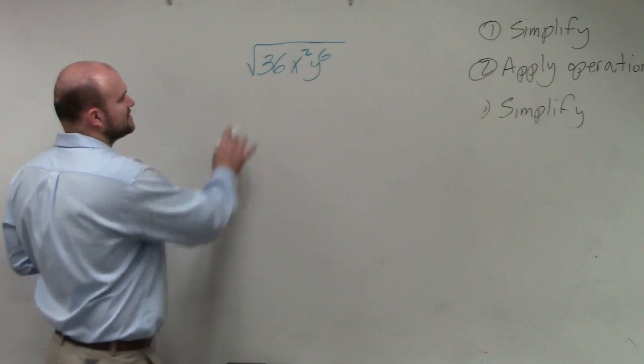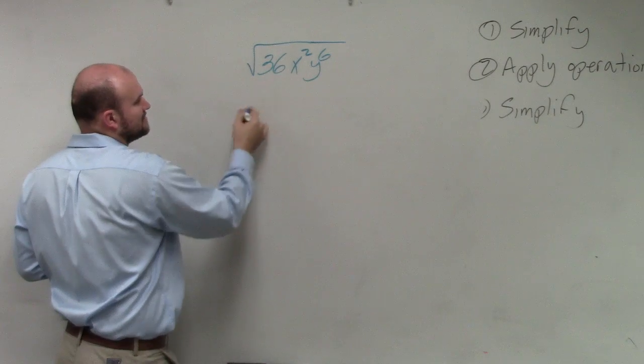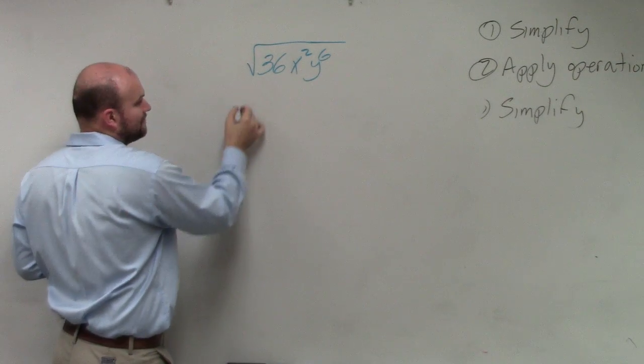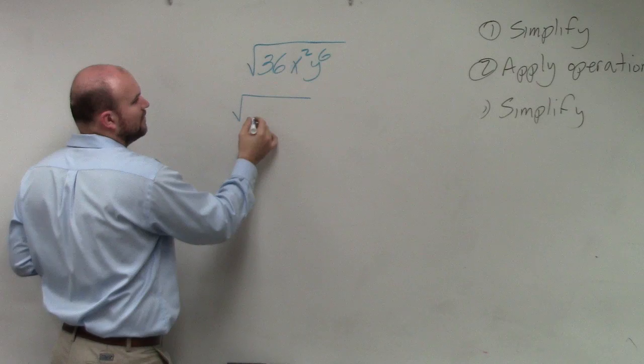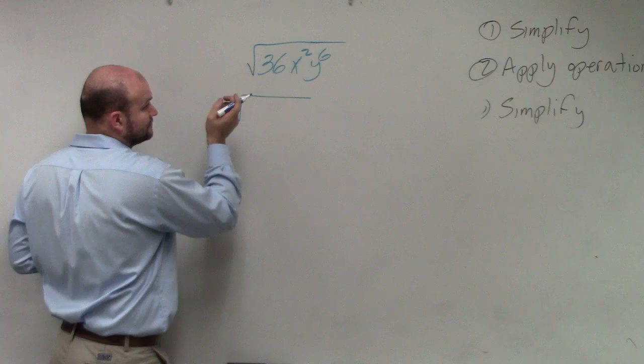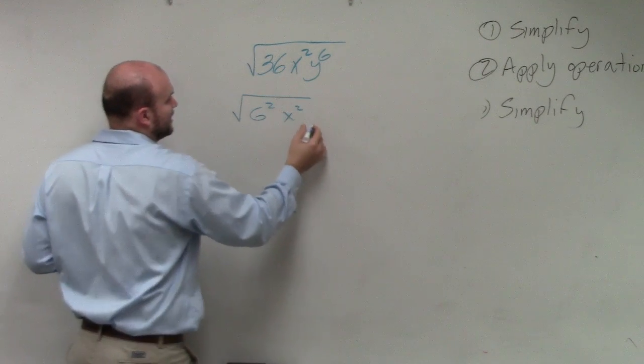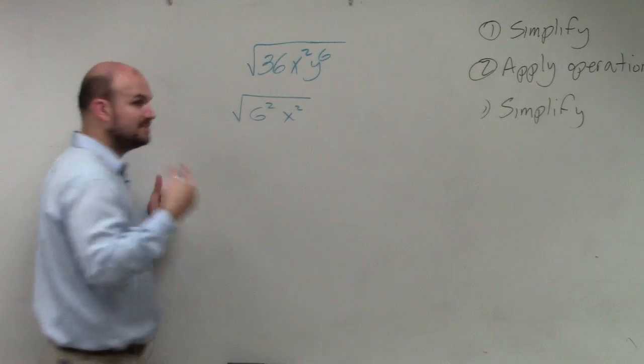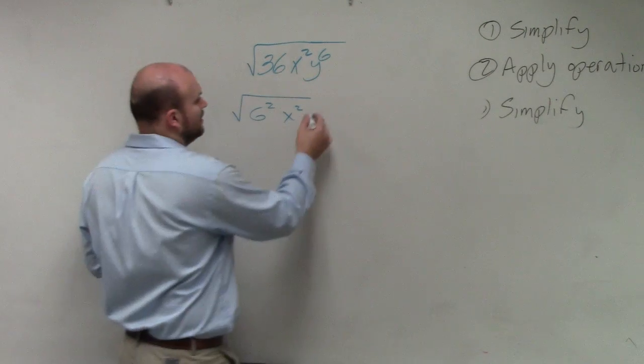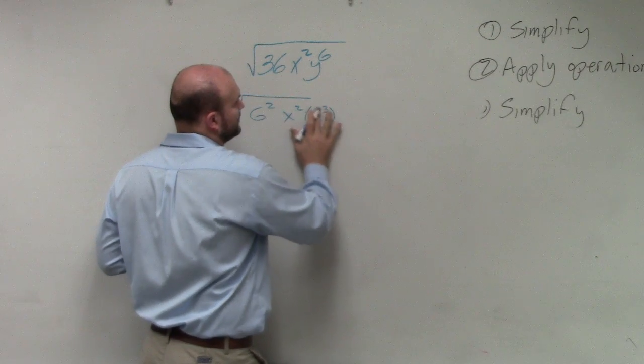So based on the square root, we want to rewrite this in terms squared. So therefore, we're going to have this would be 6 squared x squared. And you can do y squared times y squared times y squared, or you can also do y cubed. I'm sorry, y cubed, thank you.